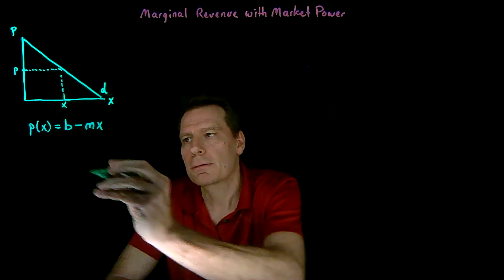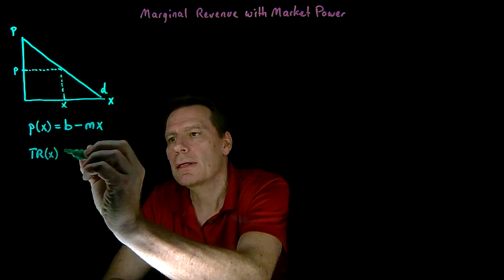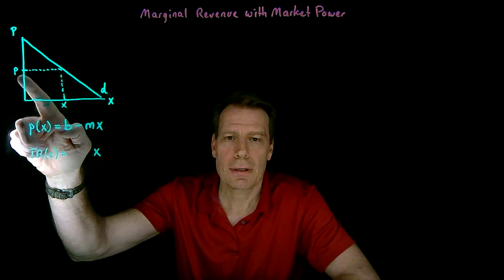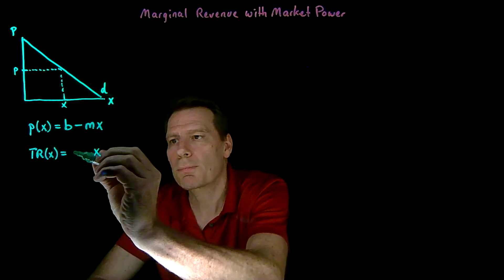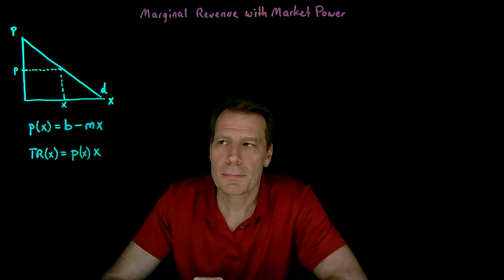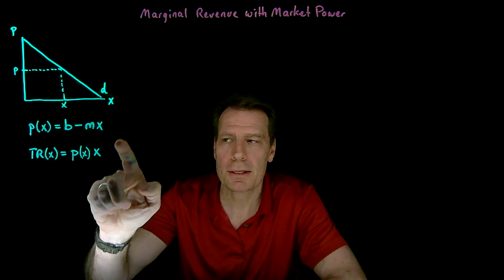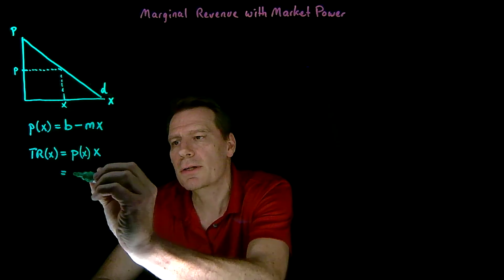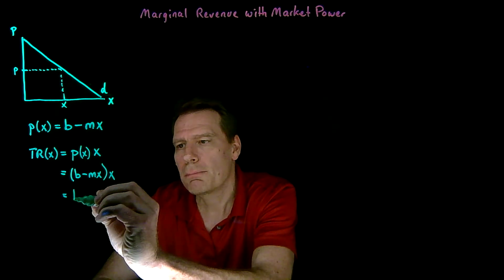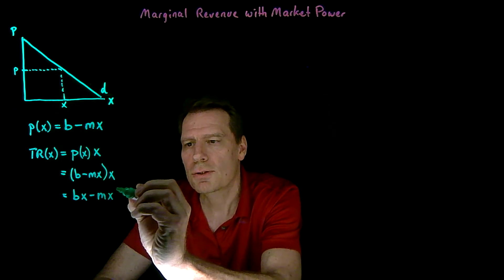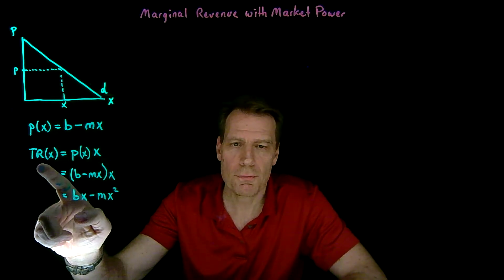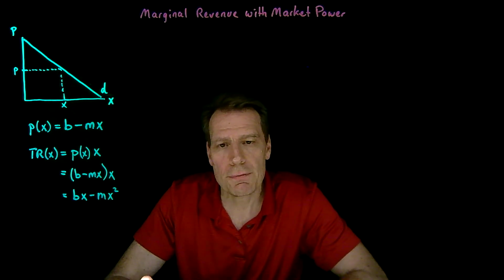The total revenue the firm gets for a given amount of output is just going to be equal to the output it produces times the price it can charge, as given by the demand curve. The demand curve tells us what price it can charge for that level of output — multiply that by x and we get the total revenue. Substituting in P(x) = b - mx gives us (b - mx) times x, which multiplies out to bx - mx². This function tells us the total revenue the firm gets for any level of output.